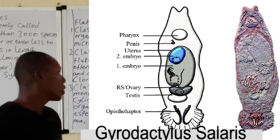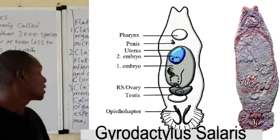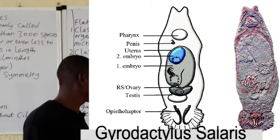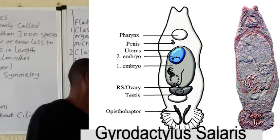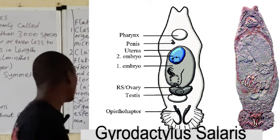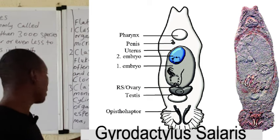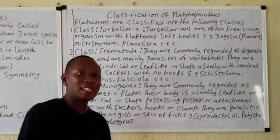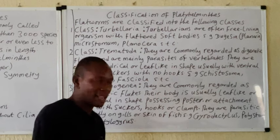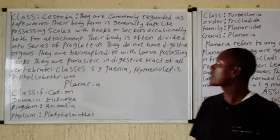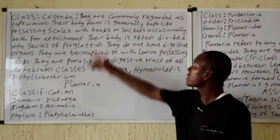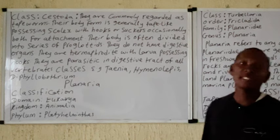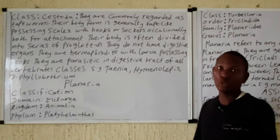Examples of monogenetic flukes being displayed include Gyrodactylus, Polystoma, and Diplozoon.